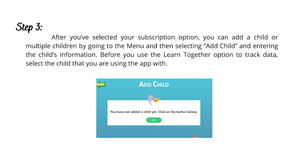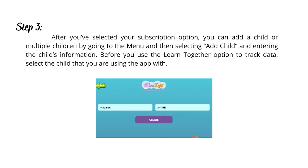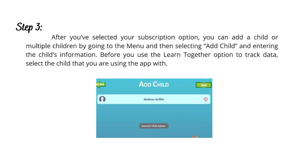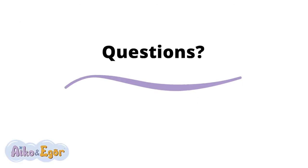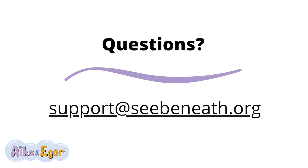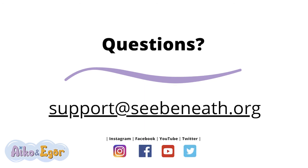Step 3: after you've selected your subscription option, you can add a child or multiple children by going to the menu and then selecting Add Child and entering the child's information. Before you use the Learn Together option to track data, select the child that you are using the app with. Feel free to email us at support@cbeneath.org.